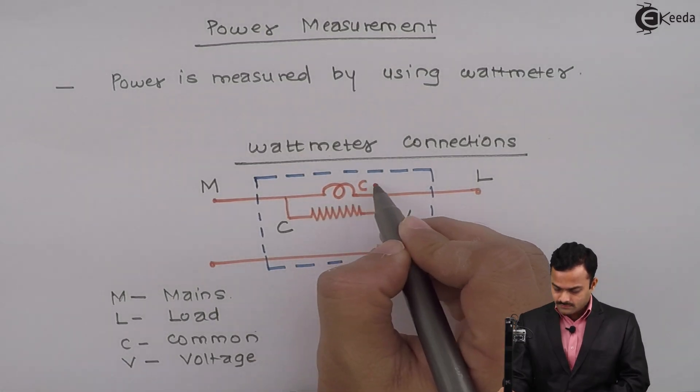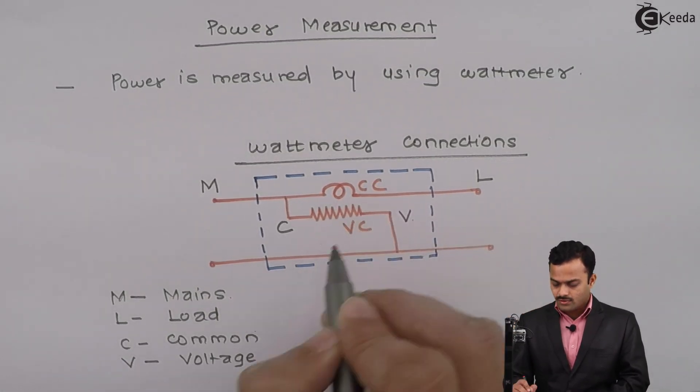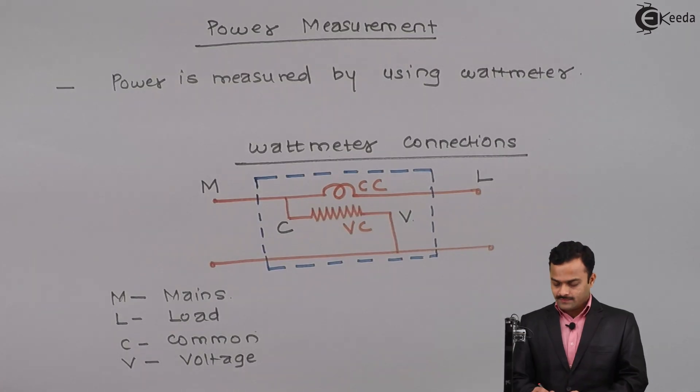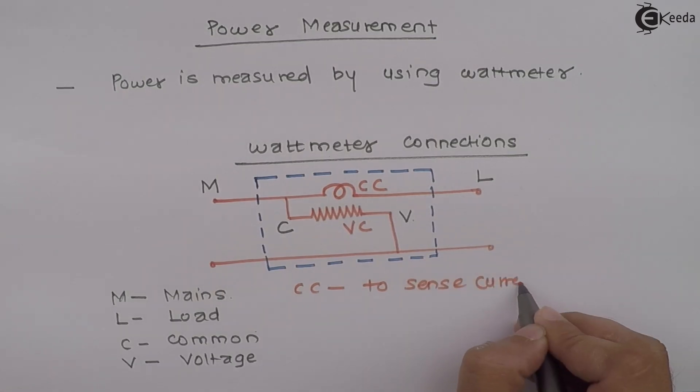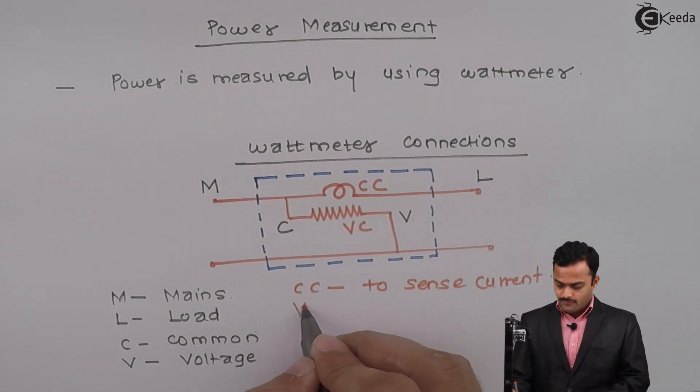The function of the current coil is to sense current, and the function of the voltage coil is to sense voltage.